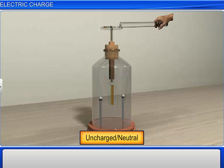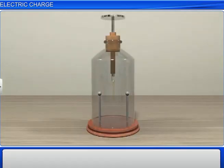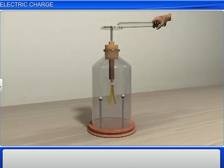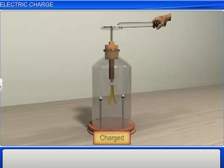If the gold leaves repel each other, then it indicates that the glass rod is charged. The amount of divergence provides a rough measure of the charge on the glass rod.